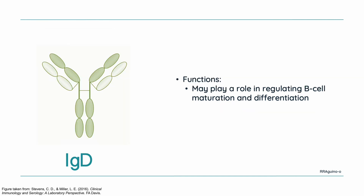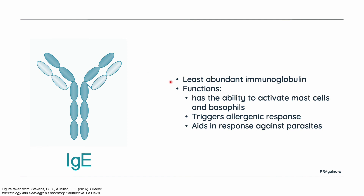Next, we have IgD. Scientists aren't really sure what the true function of IgD is, but they hypothesize it may play a role in regulating B-cell maturation and differentiation. The only site in the human body where you can find IgD is on the surface of B-cells. Lastly, we have IgE. This is the least abundant immunoglobulin. Its main function is the ability to activate mast cells and basophils, and it is also a very strong trigger for allergenic response. One important function of IgE is that it aids in the response against parasites — because parasites are very large organisms, the body needs many immune cells to combat them, and IgE is responsible for attracting immune cells and white blood cells whenever it encounters a parasite.